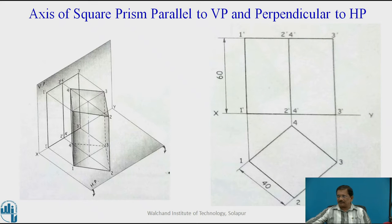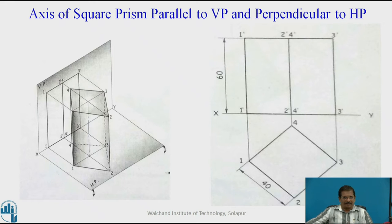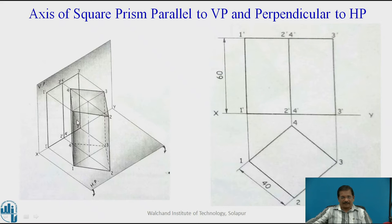Now, if you consider this axis of square prism parallel to VP and perpendicular to HP, if you observe the 3D sketch drawn towards the left-hand side of the screen, it is a square prism — its base and top base will be square, whereas its side faces will be rectangular. These faces are rectangular, whereas the top surface and the bottom one is a square. This is the axis of the prism.